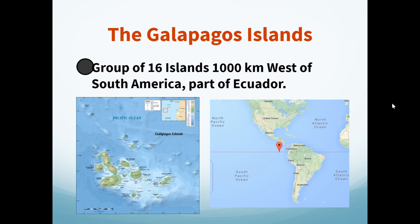The Galapagos Islands are a group of about 16 islands, a thousand kilometers or so west of South America, and part of Ecuador. The climate — temperature and precipitation — on these islands is usually quite tropical, and we usually see lots of biodiversity in very tropical ecosystems, and that's what Darwin observed.